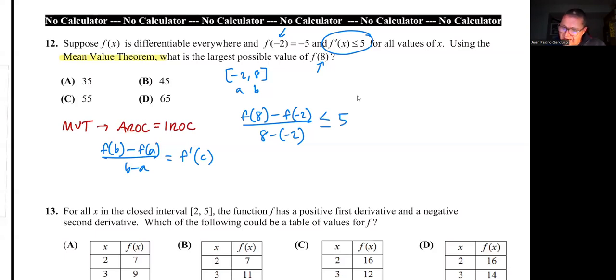It turns out that I have some information here that I can actually replace. I don't know what f(8) is. That is actually what I'm trying to find. But I do know what f(-2) is. So f(8) - f(-2) is -5, over 8 - (-2) is 10. That is less than or equal to 5.